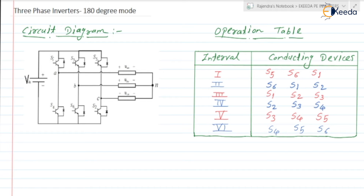Be careful — the numbering of the switches must be S1, S3, S5 and S4, S6, S2 exactly. Only then will this operation table be valid; if you change the switch numbers, the operation table will change. The three-phase output is taken from phase A, phase B, and phase C terminals. The load may be connected in star or delta, but here we have considered it as star connected.